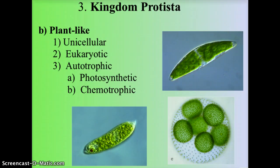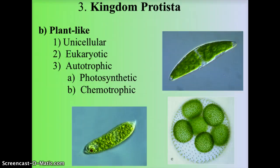The plant-like protista are also unicellular eukaryotes with an organized nucleus. They are typically autotrophic — able to produce their own energy. There are two types: photosynthetic autotrophs, which take sunlight or UV light and convert it into energy as plants do, and chemotrophic autotrophs, which use chemicals in their environment to create energy.